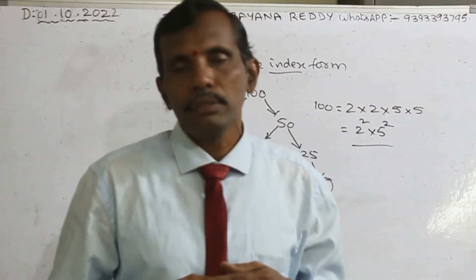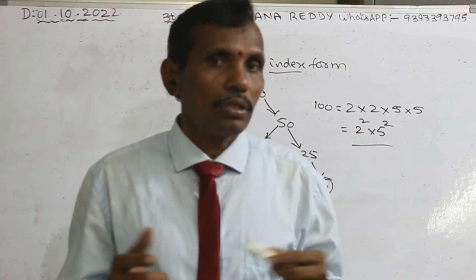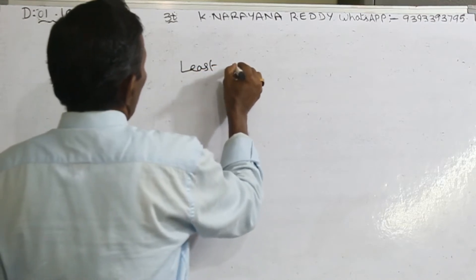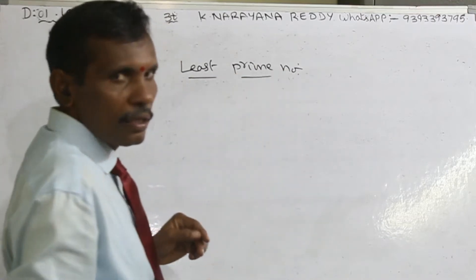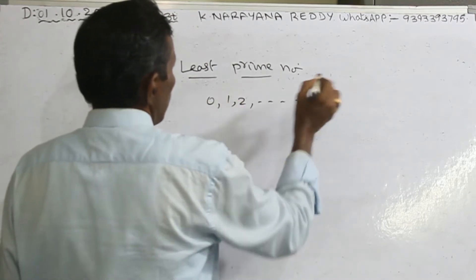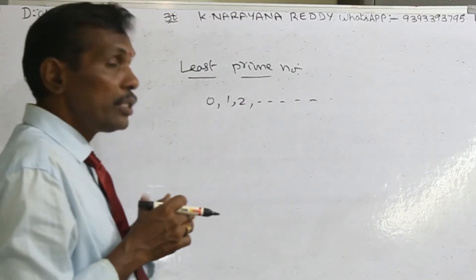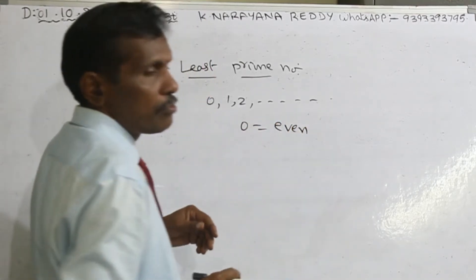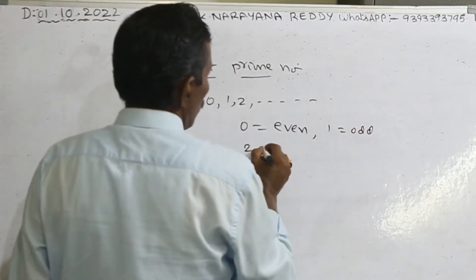The main important point is the prime number definition. But what is the least prime number? We will have the numbers from 0, 1, 2, etc. Zero is even, 1 is odd, 2 is even, 3 is odd — alternate numbers come in order, even and odd.